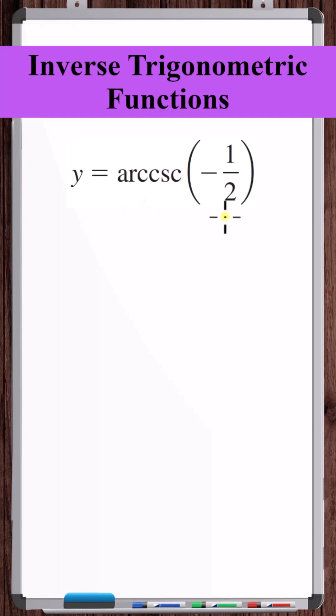What is arc cosecant of minus one-half? Well, we know that any inverse trig function is asking the question: what angle, when you take its cosecant, do you get the argument, or in this case, minus one-half? Now,